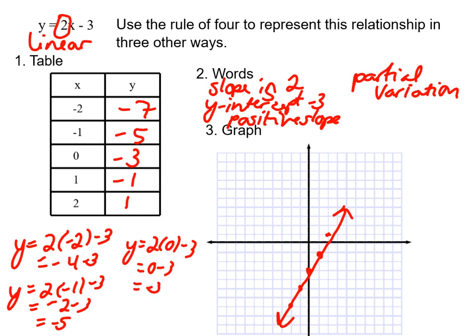So that's the Rule of Four — it gives you one piece and you've got to find the other pieces. It's describing a relationship with a table, with words, with a graph, and with an equation.